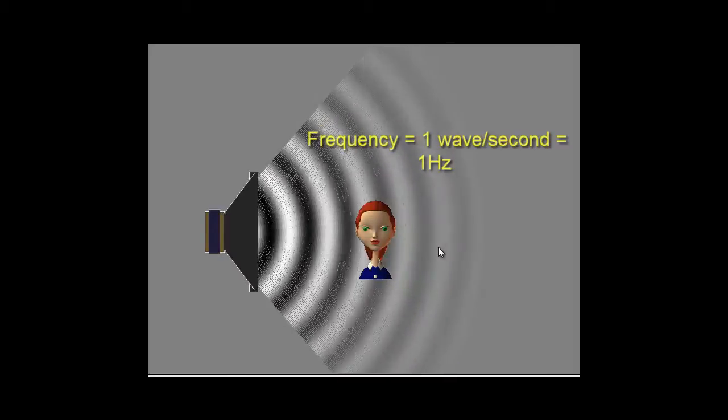Now we want to examine something called frequency. If I just look at my simulation we can see that it's making about one wave per second, a fairly low frequency wave. One wave per second is hitting my eardrum and we would say that has a frequency of one Hertz.